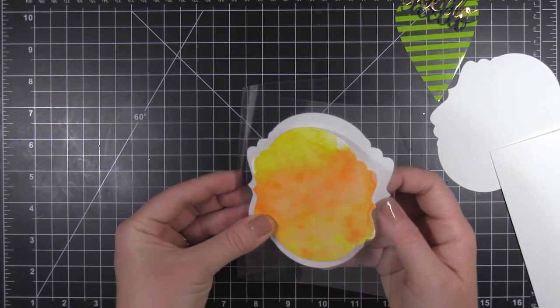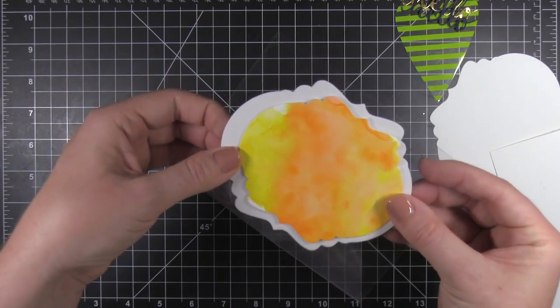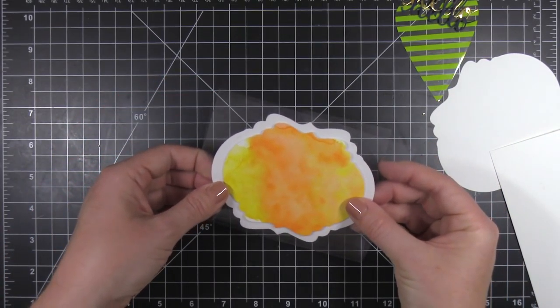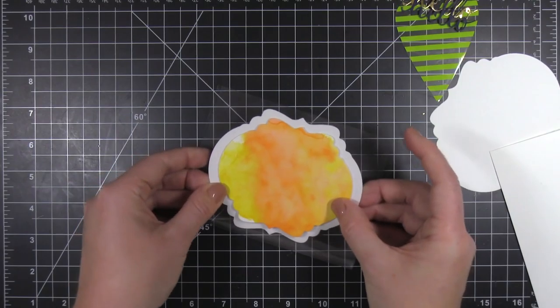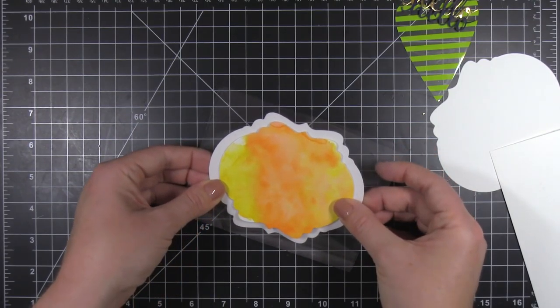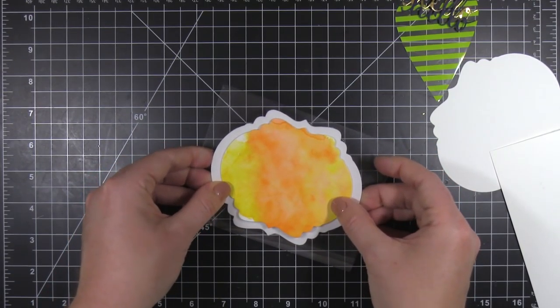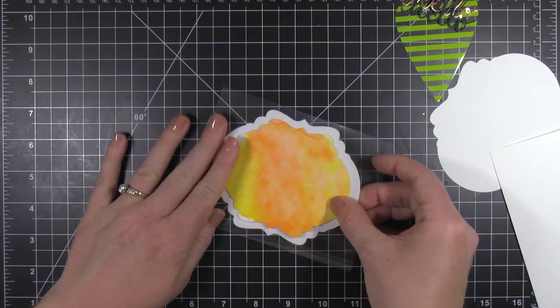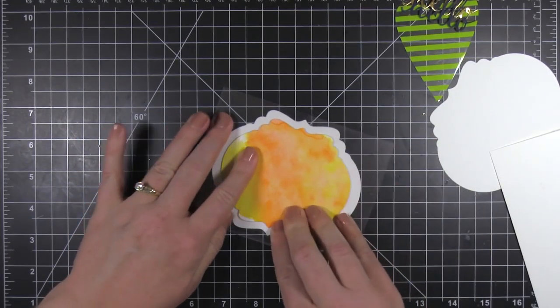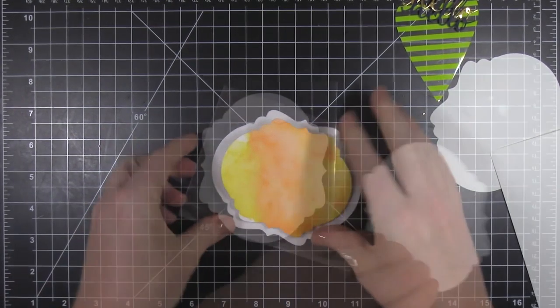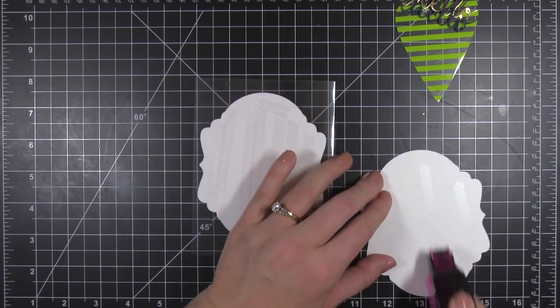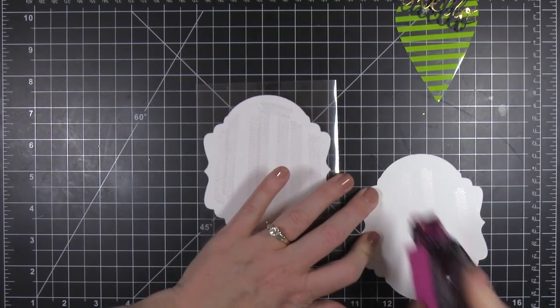So I've added adhesive to the back of that and I'm going to go ahead and position it right where I want it and just get it lined up. So I'm using that one that's already on the front to line it up. Once I get it into position, then I'm just going to close the note card. And that way, because the adhesive is already on the back of it, it's going to stick exactly in the place that I want it.